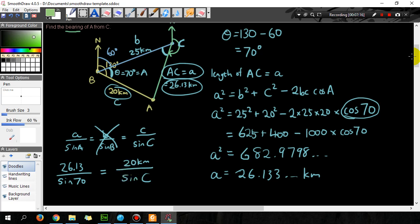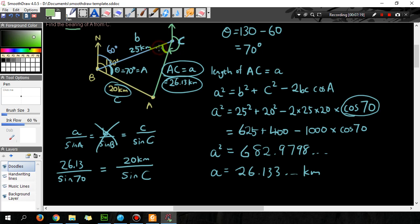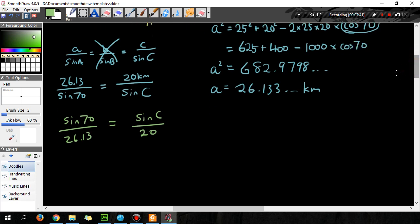So to find angle C, to find this angle here, what we're going to do is rearrange this formula. So what I'm going to do is flip both fractions upside down. So sin C over 20 equals sin 70 over 26.13 and then I multiply 20 on the left.